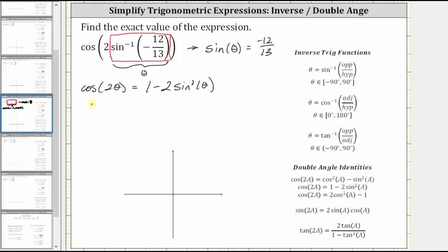So performing the substitution, we have one minus two times sine squared theta is equal to the square of negative 12 thirteenths, which gives us one minus two times, the square of negative 12 thirteenths is 144 one sixty-ninths, which gives us one minus 288 one sixty-ninths.